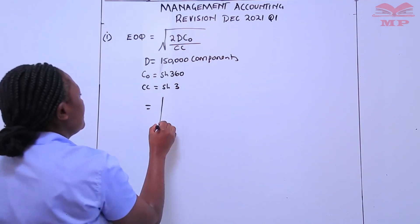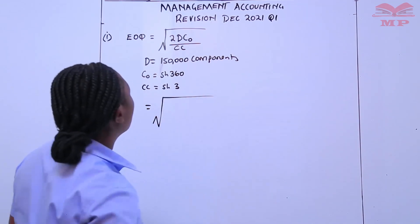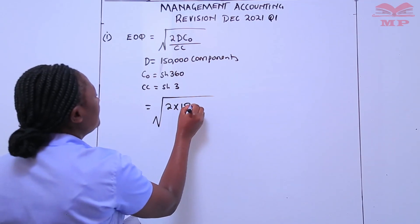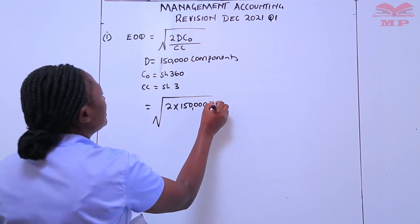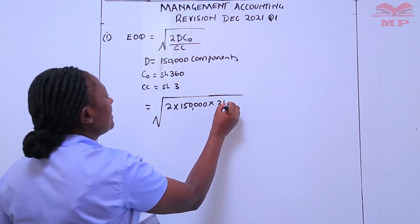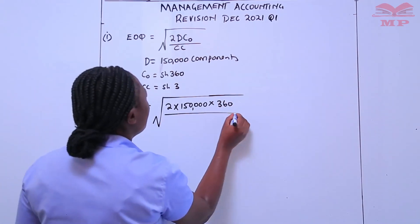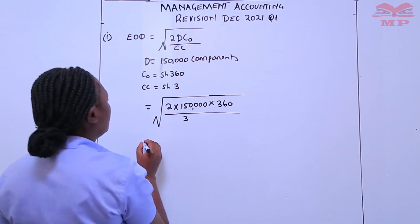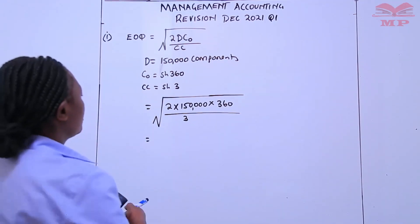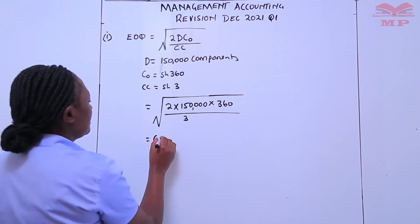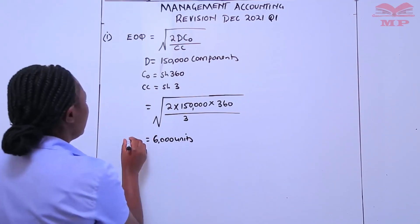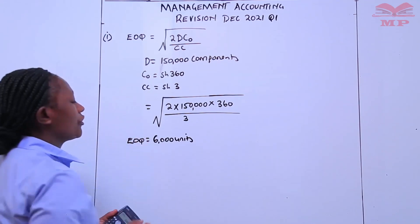We substitute into the formula: 2 times 150,000, multiplied by 360, divided by 3. So this gives us 6,000 units. And this is the EOQ.